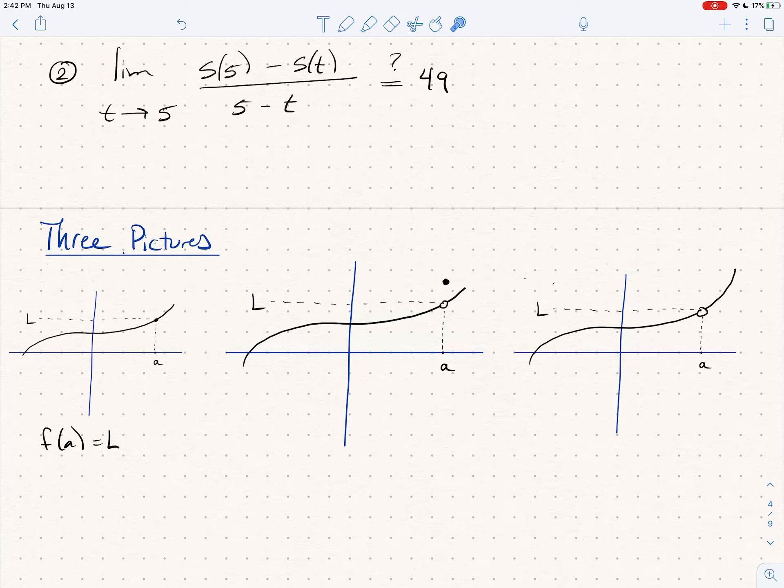Pause the video and think about that for a minute if you need to. As x goes to a, the function is getting closer and closer and closer to this y value L. L is a y value, a is an x value. So here for this example, the limit as x goes to a of f(x) is exactly L.